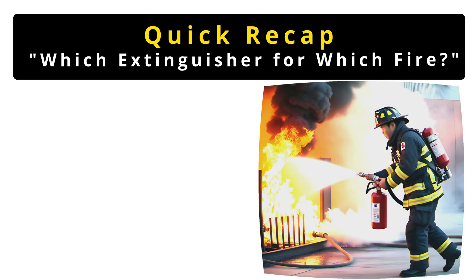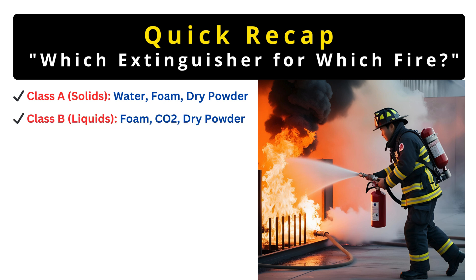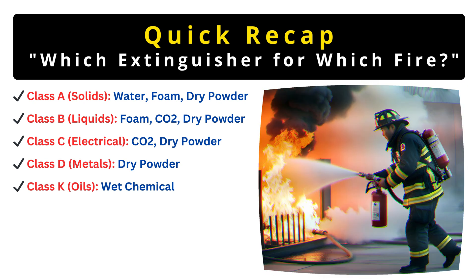So there you have it — the essential guide to fire extinguishers. Quick recap: for ordinary fires like wood or paper, use water or foam. For flammable liquids, use foam or CO2. For electrical fires, use CO2 or dry powder. For metal fires, only dry powder. And for kitchen fires, wet chemical is your best friend. Always check the label before use, and remember: using the wrong extinguisher can be just as dangerous as the fire itself.